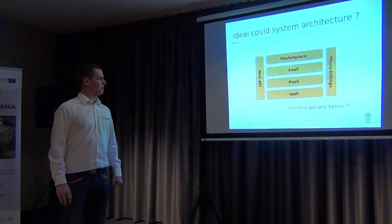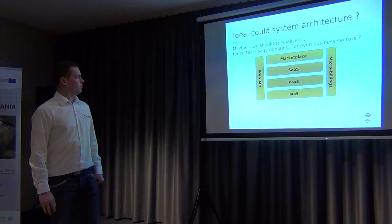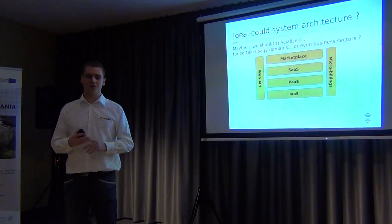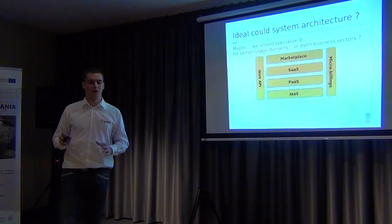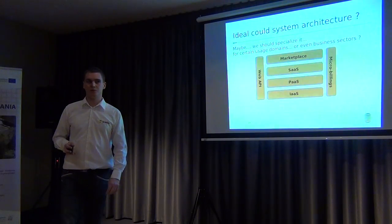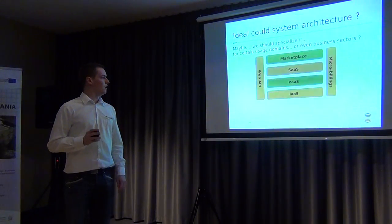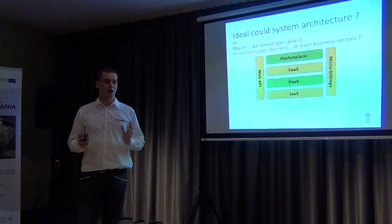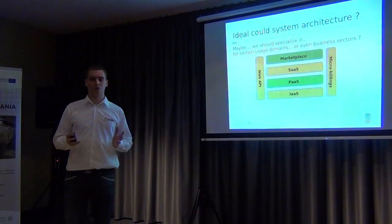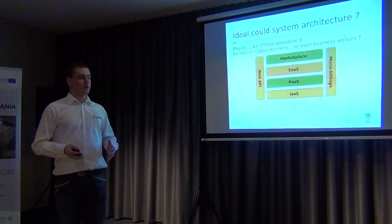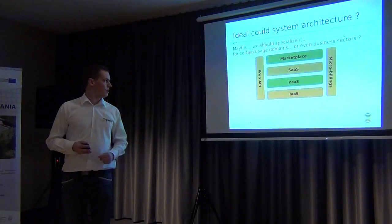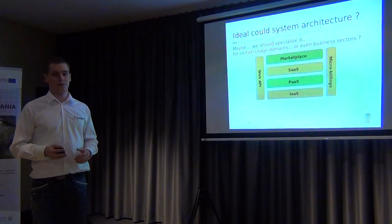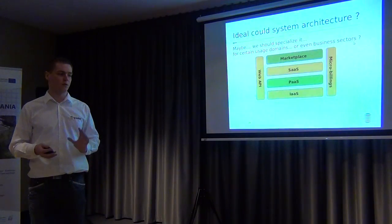But could this get any better? We think it could. What if we specialize some components in this diagram to a certain business model or usage domain? We think two components would be easily customizable: we could create platforms for specific business models — like a platform for building manufacturing industry solutions — and we can specialize marketplaces for specific businesses or specific clients, not just for devices or browsers but to a specific domain of usage.